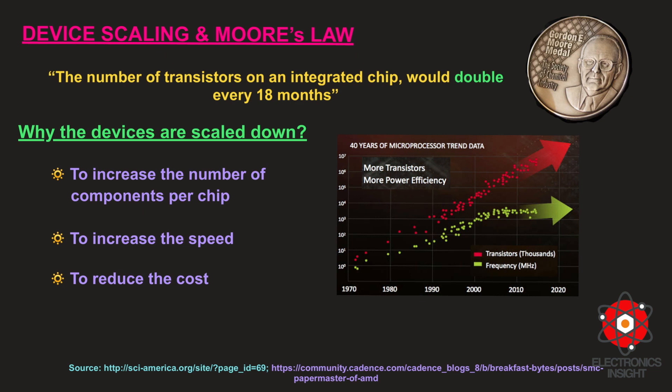The performance of all these nanoelectronics has exponentially increased, which was successfully anticipated by Gordon Moore in 1965. As per Moore's law, we understand that the number of transistors on an integrated chip would double every 18 months, and his prediction continues even till now.